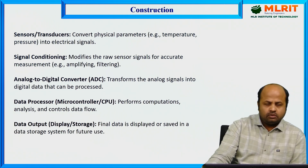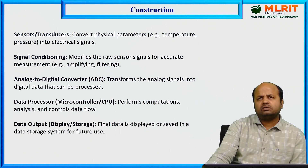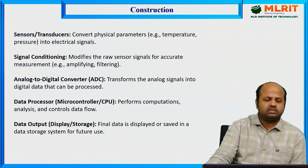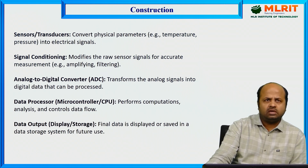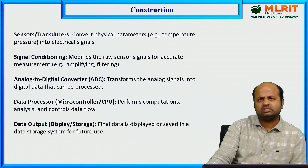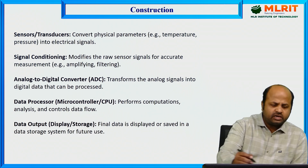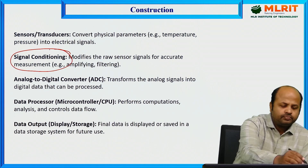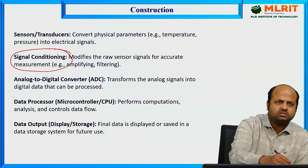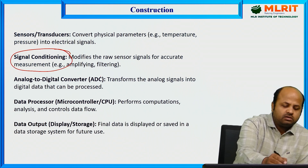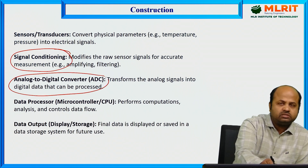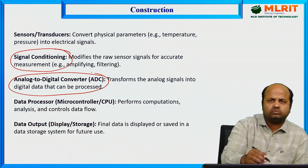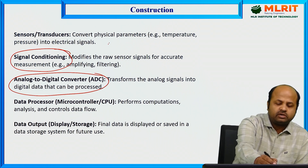Now, how to construct a data acquisition system? The first block is sensors — like temperature sensors, pressure sensors, or humidity sensors. After that, we apply signal conditioning, which we have already discussed. After that, we have the analog to digital converter, which converts the signal into digital format.